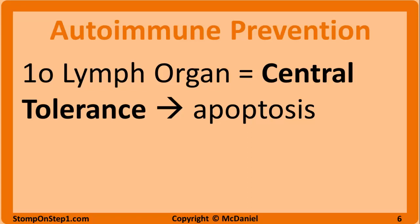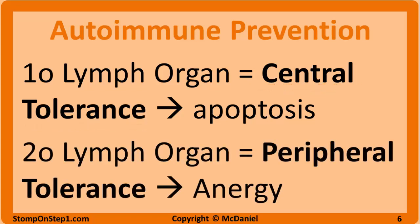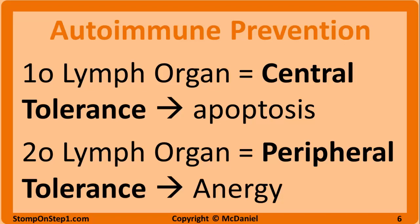The problem with randomly generating surface receptors is that some leukocytes will now be able to bind to the body's own cells. If these self-reactive lymphocytes were activated, they would cause autoimmune damage where the immune system targets the body's tissue instead of foreign material. The body has a two-step process for preventing this called negative selection. In the primary lymphoid organs, self-reactive lymphocytes are removed by central tolerance, also known as clonal deletion — developing T and B lymphocytes that interact too strongly with self antigens undergo apoptosis. In the secondary lymphoid organs, there is a similar process called peripheral tolerance or clonal anergy, where self-reactive cells that bind to soluble self antigens are prevented from proliferating or being activated but are not actively killed.